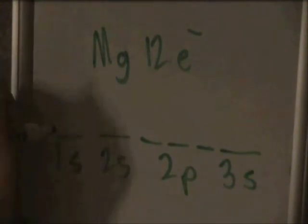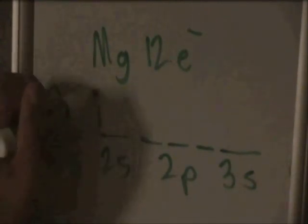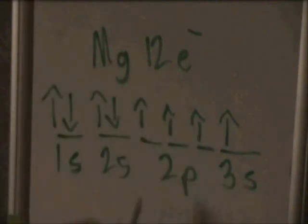Because of Aufbau's principle we have to fill up the lowest energy level with the first electron. And then also because of Hund's Rule we have to put in one electron in each orbital.